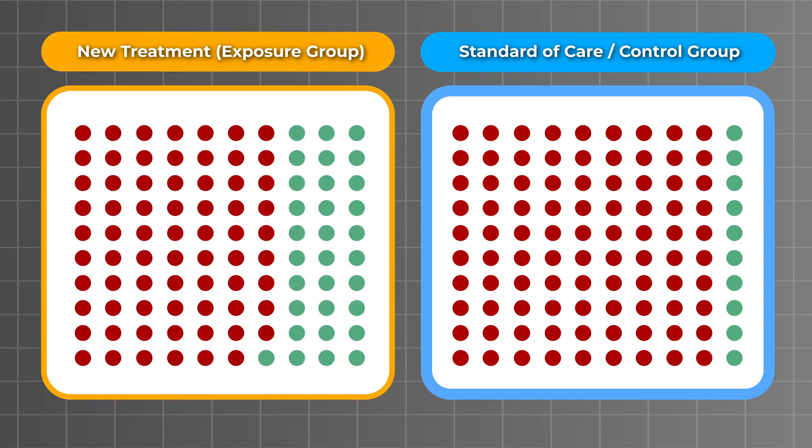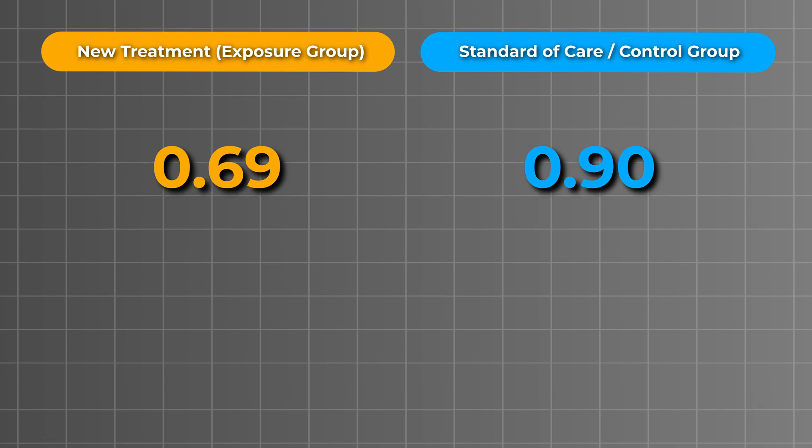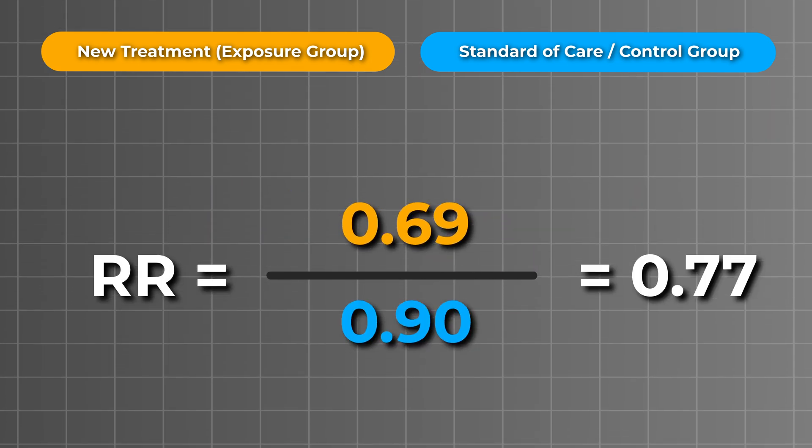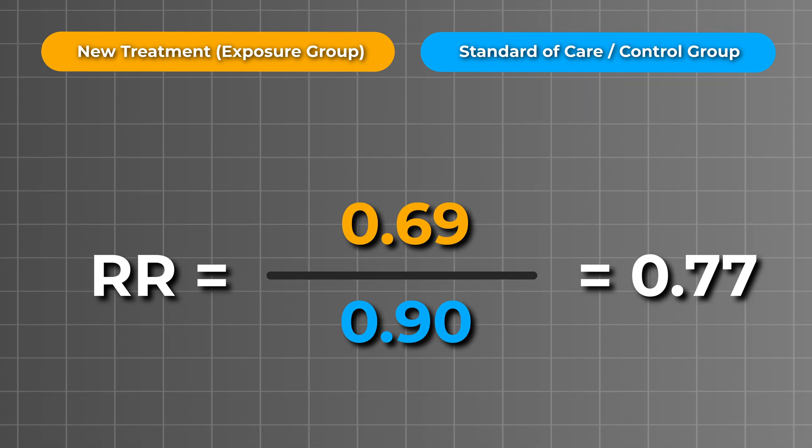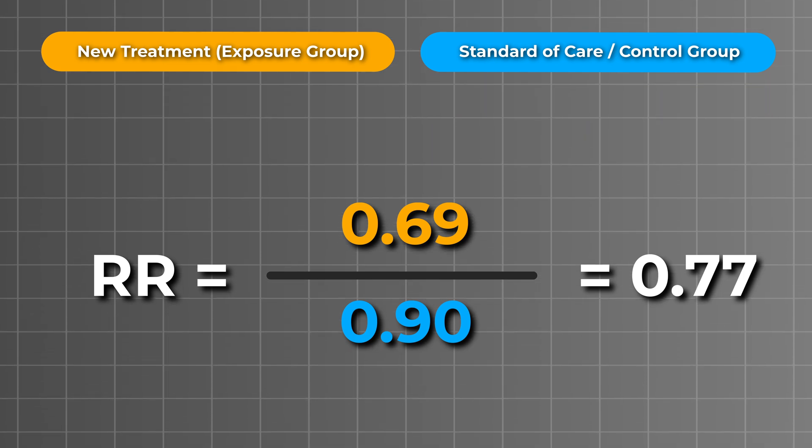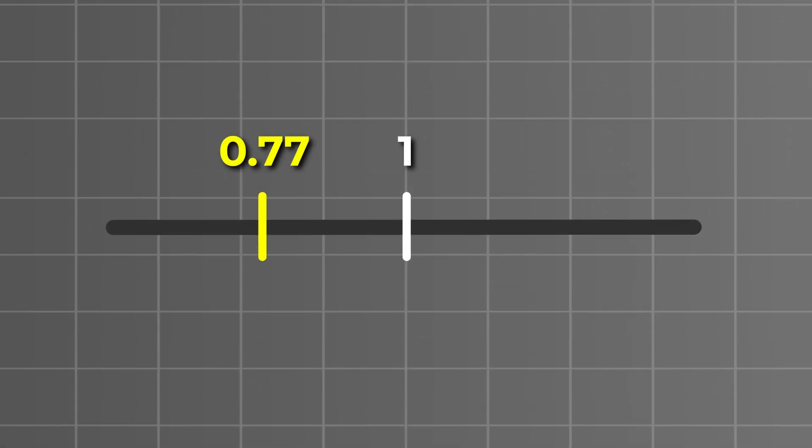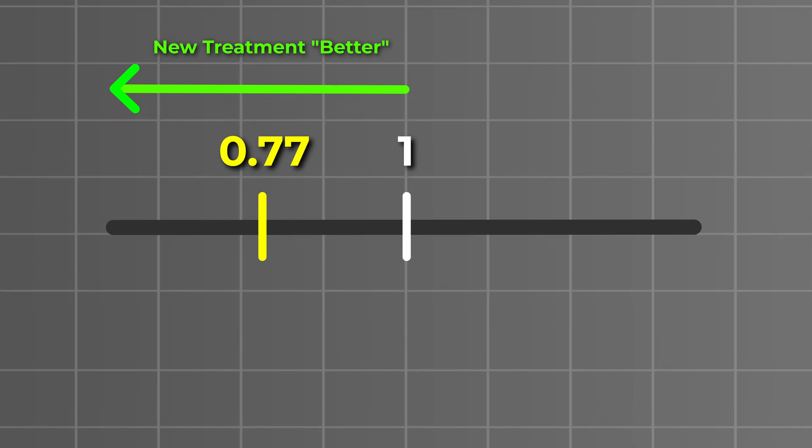The risk ratio simply compares these two risks by expressing the risk in the intervention group relative to the risk in the control group, calculated as the risk in the intervention group divided by the risk in the control group. This means we divide 0.69 by 0.9, resulting in a risk ratio of 0.77. Since this value is less than one, it indicates that our new intervention reduces the risk of death compared to the standard of care.